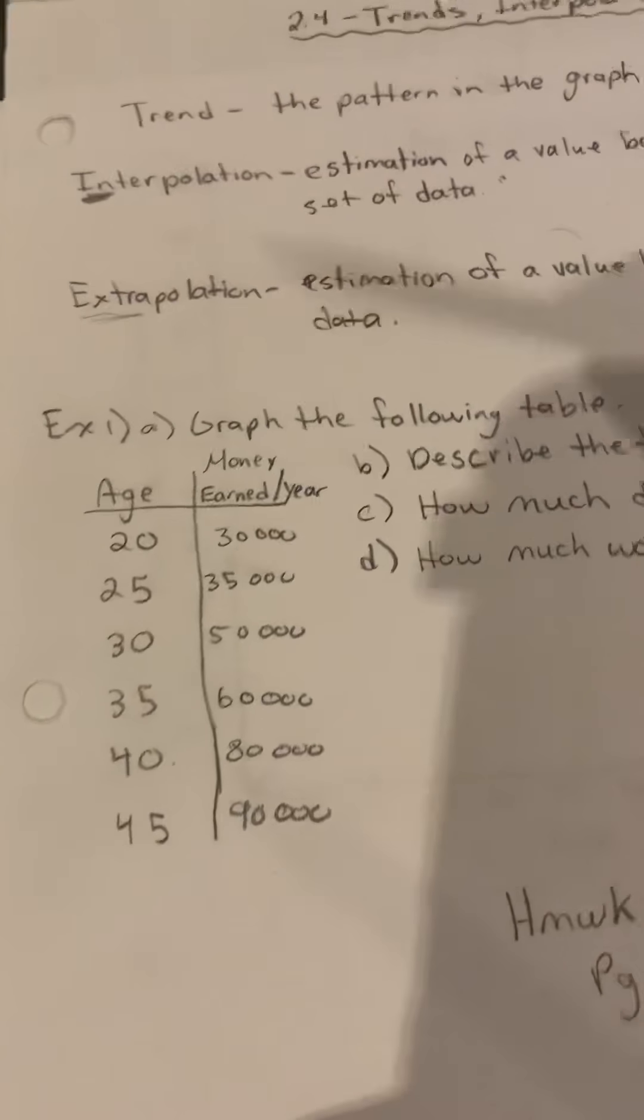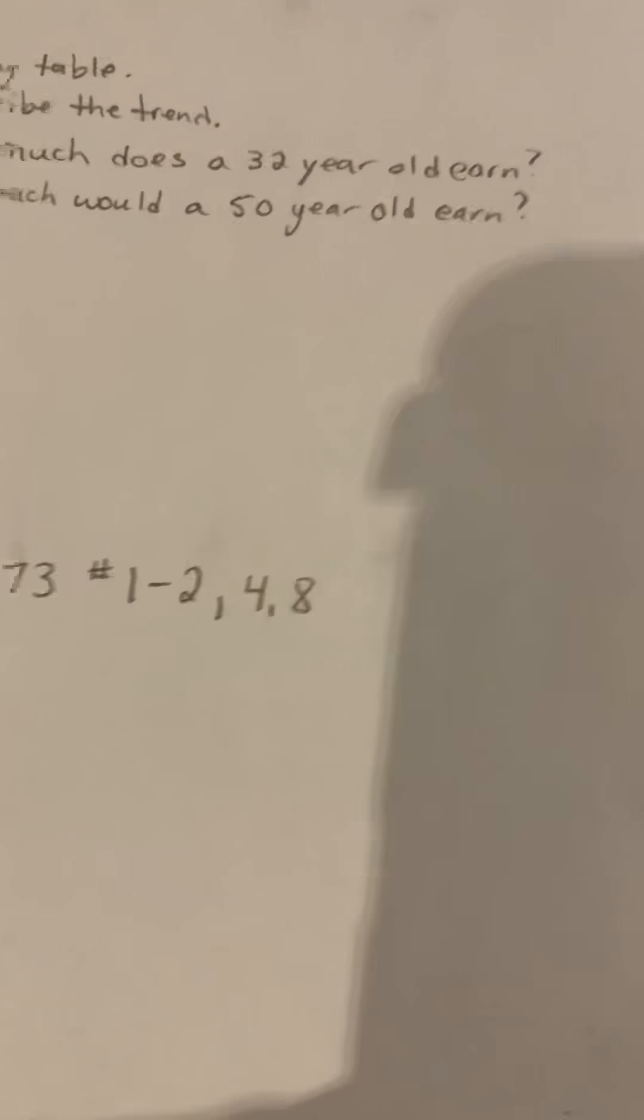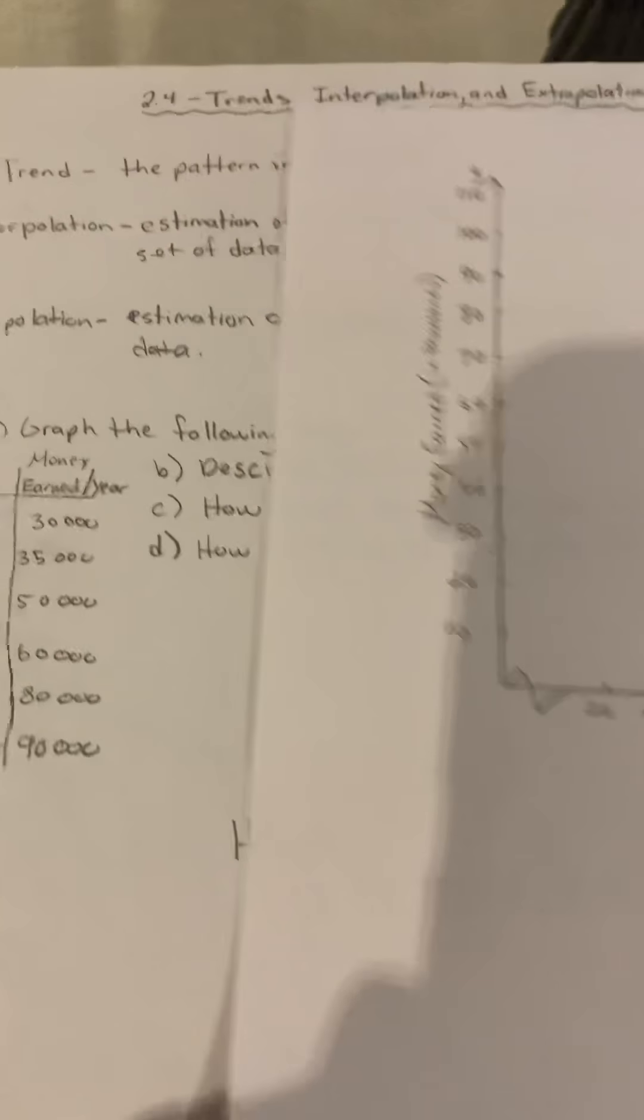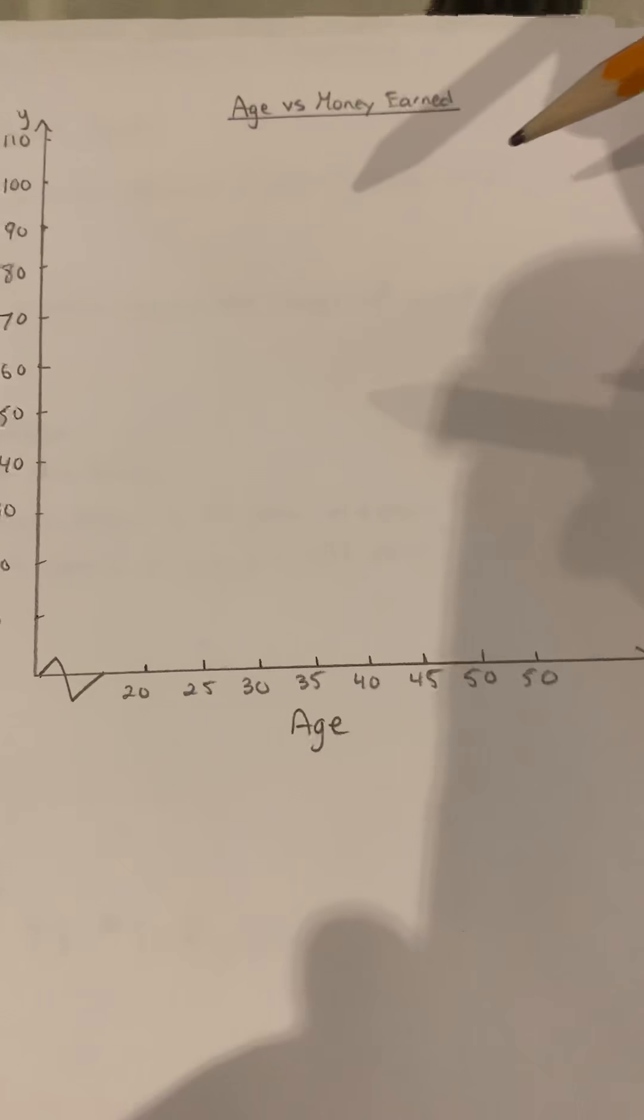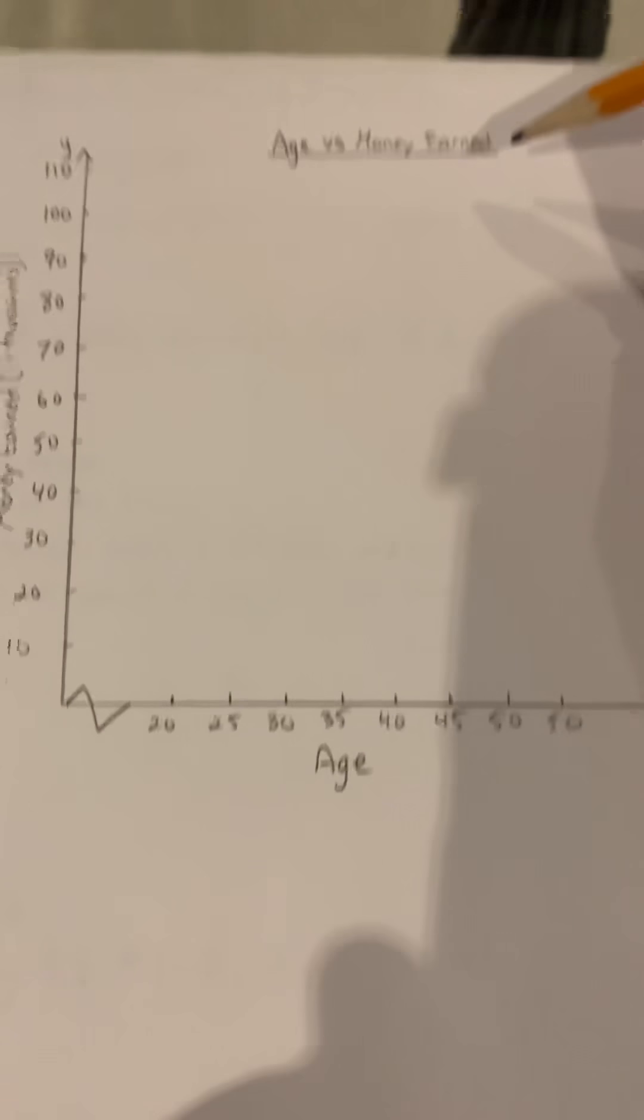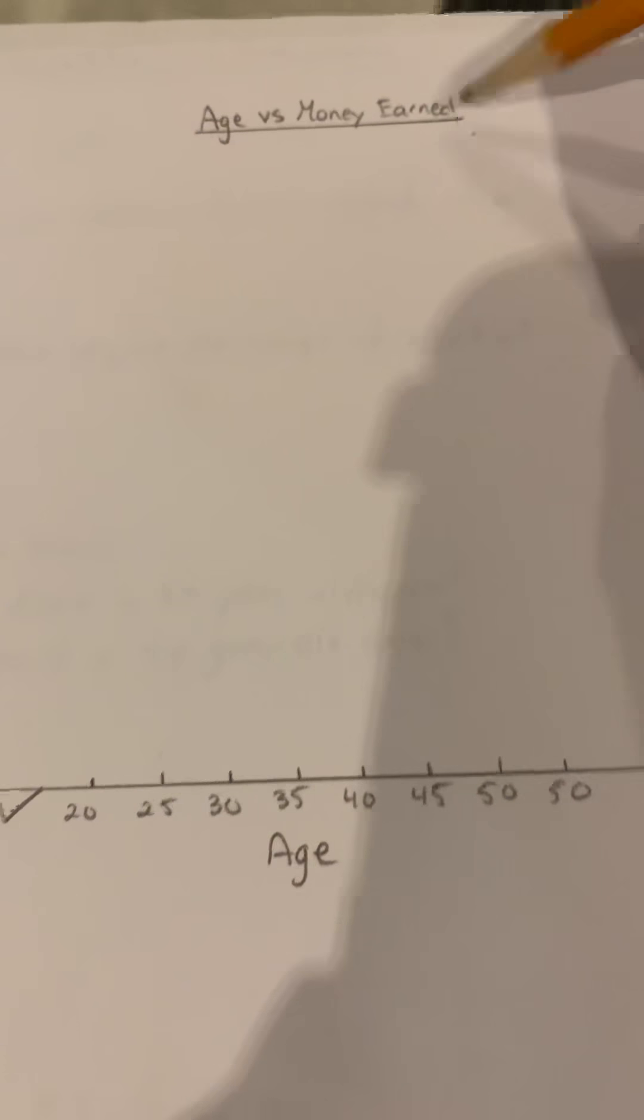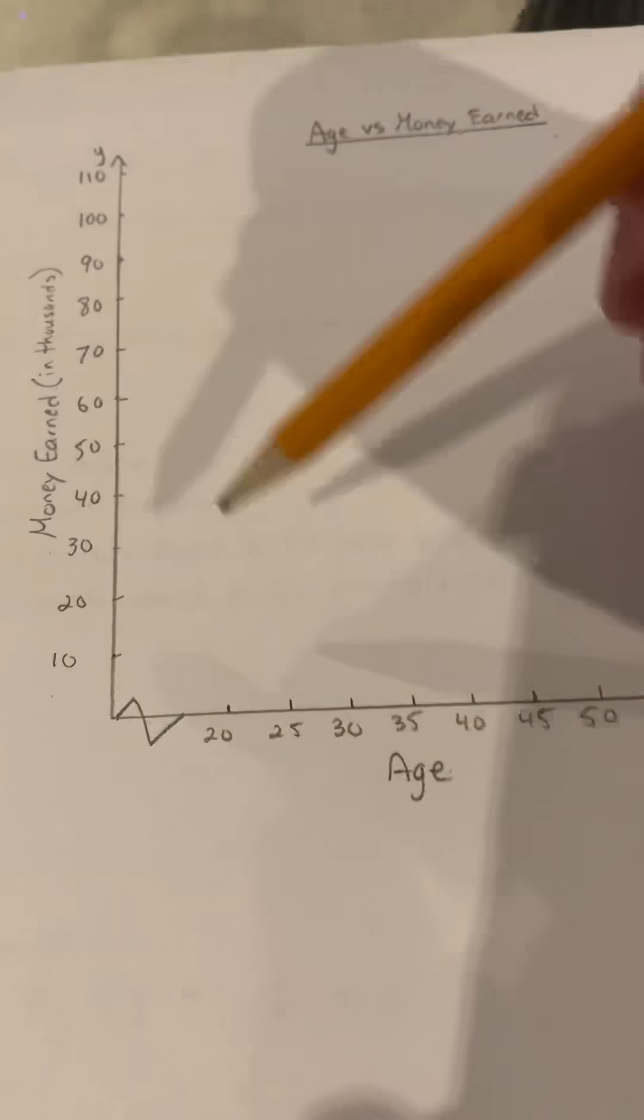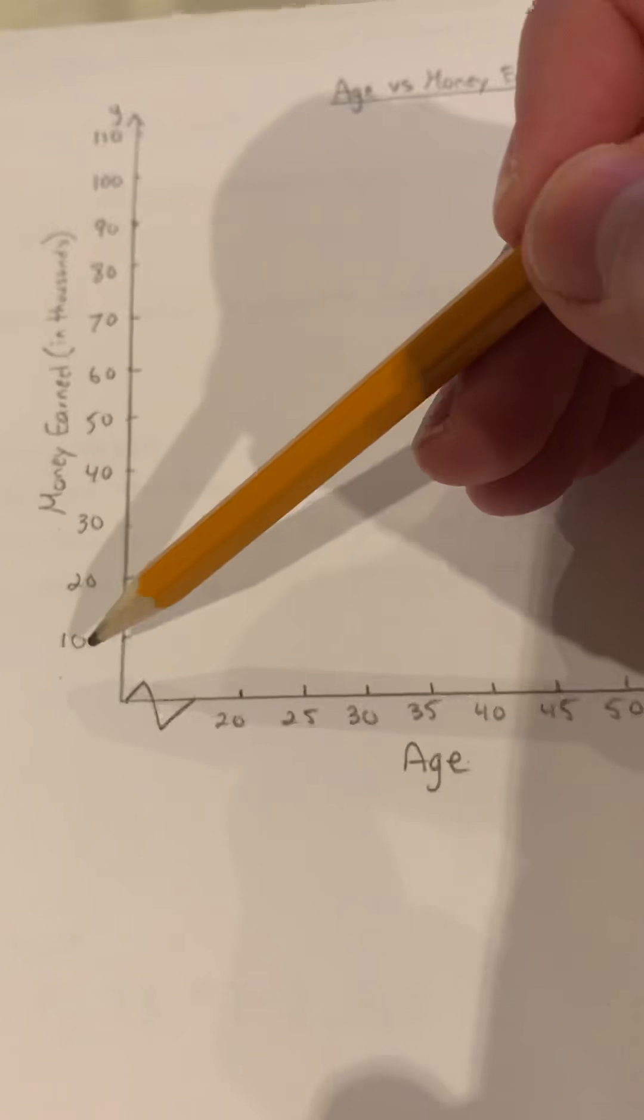Number one says to graph the following table. We have our x column which is age and a y which is money earned. I have created a graph over here for the data. Going through our nine points that we've learned before March break. Number one we need a title, so it's age versus money earned here. We have our subtitles, our age and here money earned. I put in thousands just because I didn't write out ten thousand.